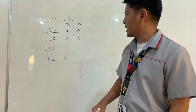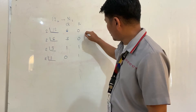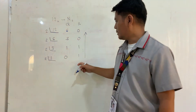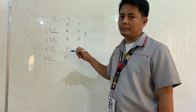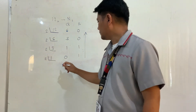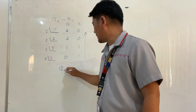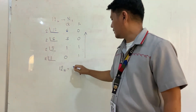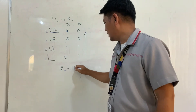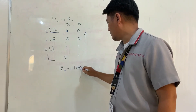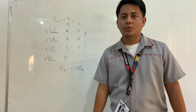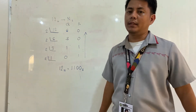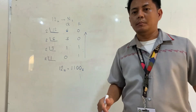We stop the process and are going to rewrite the remainders from bottom to top. Therefore, 12 in decimal is equal to — rewriting from bottom to top — 1, 1, 0, 0 base 2. This is the long method of converting decimal into a binary number.